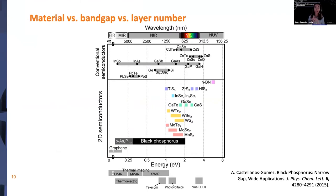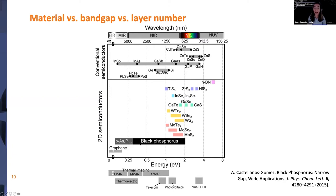Diving more into material versus band gap versus layer number — we can engineer the band gap not only by choosing the material but by choosing how many atomic layers we stack on top of each other, tuning how the material will optically or electrically respond. A plot of current literature shows 2D semiconductors versus band gap energy compared to conventional semiconductors. Materials like MoS2, MoSe2, tungsten-based ones, and hBN are shown. Black phosphorus in particular showed a very wide range of band gap tuning, combining layering and strain effects.